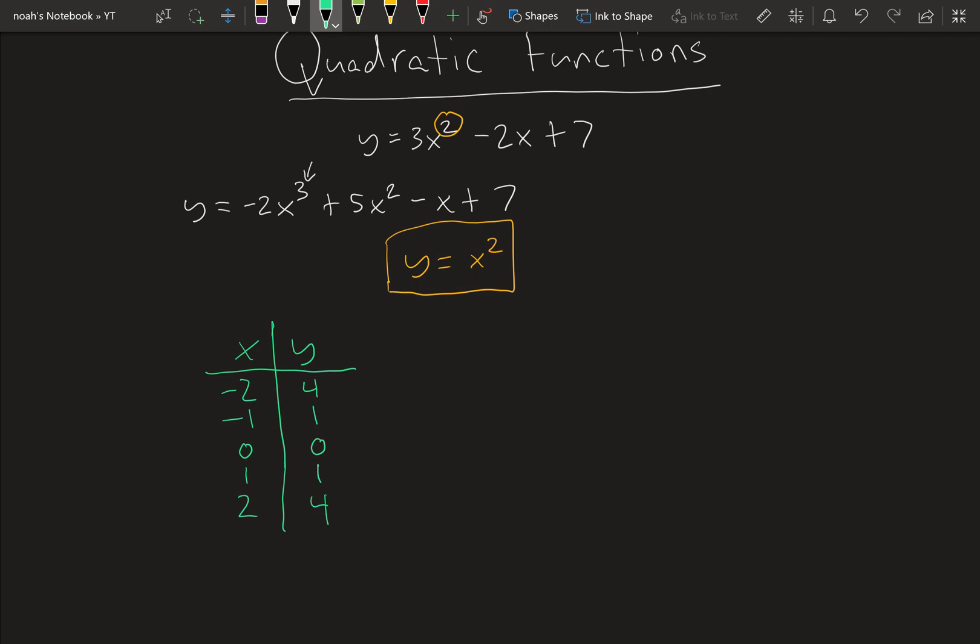2 squared is 4. So what you might have noticed is quadratic functions are symmetric, meaning these two are equal, these two are equal. And same with negative 3, y would be 9, and positive 3 would be 9.